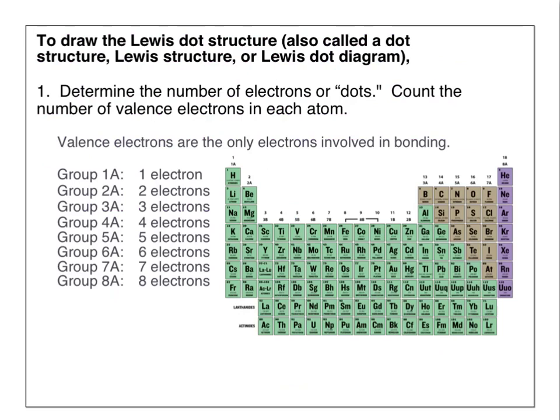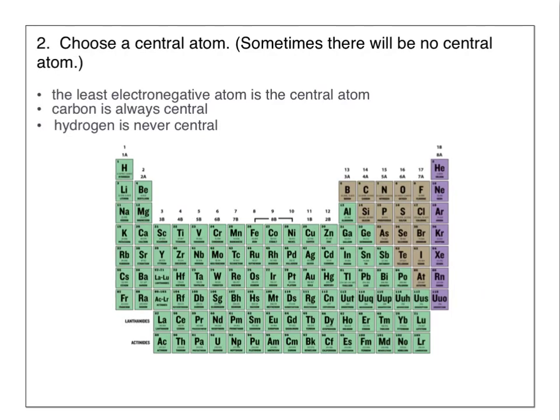Because we're looking at covalent bonds, we'll focus on nonmetals with high numbers of valence electrons that are shared between atoms. Once you've determined the total number of valence electrons for all atoms in the compound, choose a central atom. If there are only two atoms, there will be no central atom. Otherwise, the least electronegative atom is the central atom.